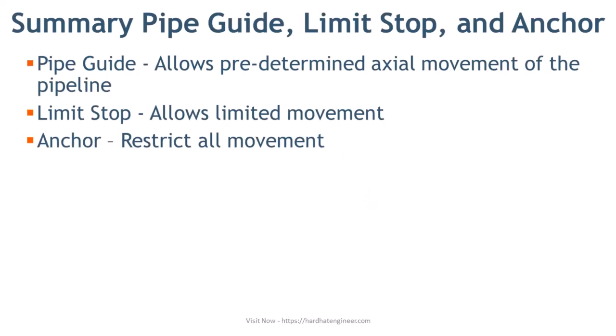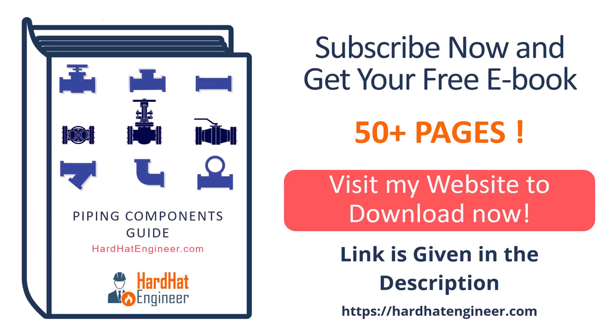Now you can easily summarize the difference between pipe guide, limit stop, and anchor. A pipe guide allows predetermined axial movement of the pipeline. The limit stop allows limited movement. And the anchor doesn't allow movement at all.